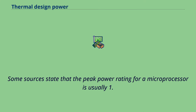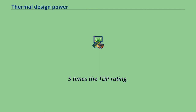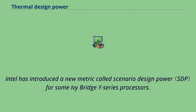Some sources state that the peak power rating for a microprocessor is usually 1.5 times the TDP rating. Intel has introduced a new metric called Scenario Design Power for some Ivy Bridge Y-series processors.